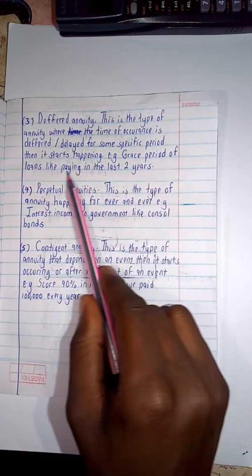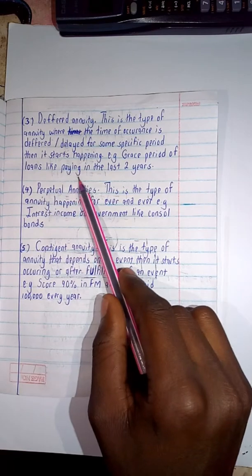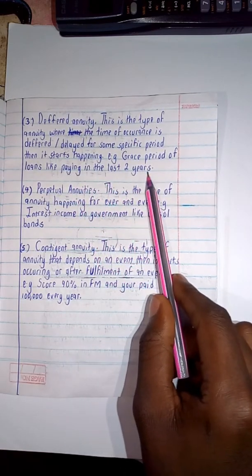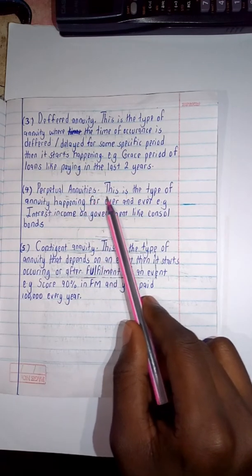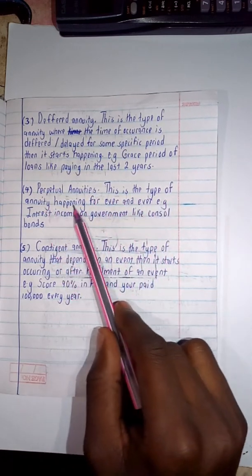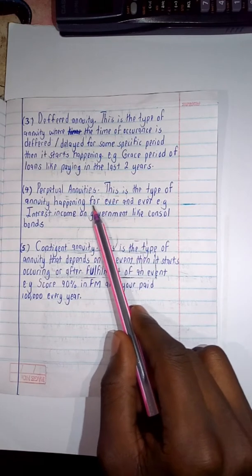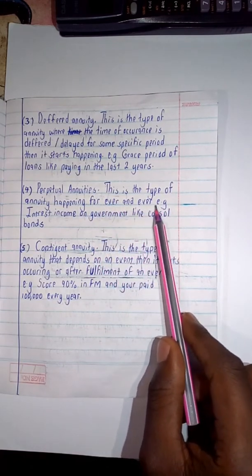Then we are having perpetual annuities. For perpetual annuities, this is the type of annuity that is happening forever and ever, for example interest income on government like consol bonds.